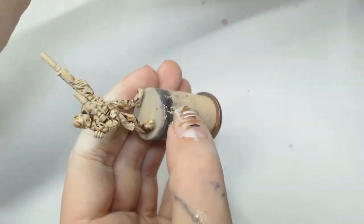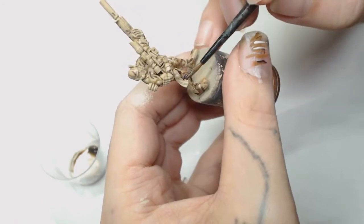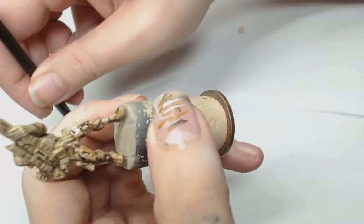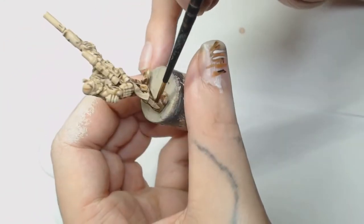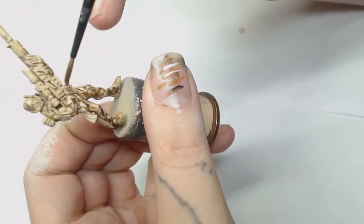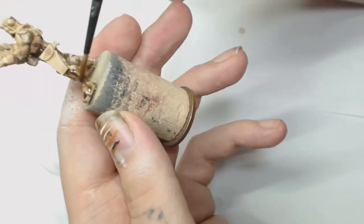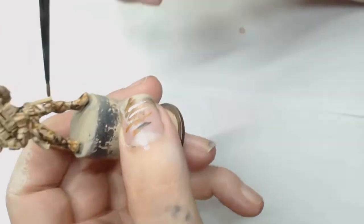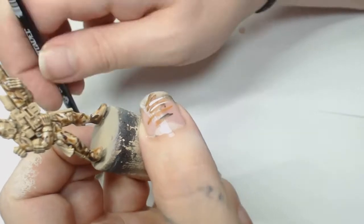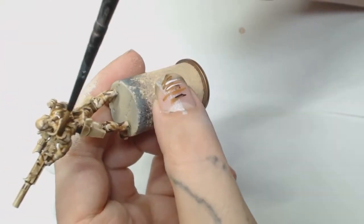Then we're going to use Army Painter Strong Tone, watered down but not as much as the Agrax was. We're going to start working that down the legs and then pulling the rest of the wash up. That helps stop the pooling at the bottom. Start at the bottom and use that as your palette, pulling the wash upwards. Make sure you get into all those recesses. Don't forget to do the camo on your gun if that's how you want it to look.